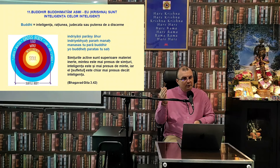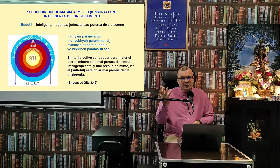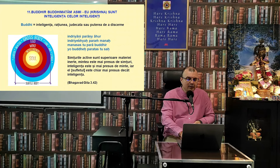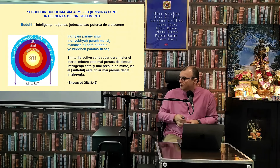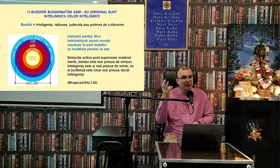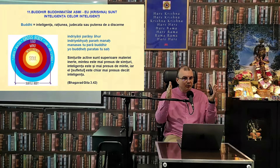Tuturor le plac oamenii inteligenți. Haideți să analizăm sensul direct al acestei opulențe. Vom începe cu semnificația etimologică a cuvântului Buddhi — inteligența, rațiunea, judecata, sau puterea de a discerne, de a vedea diferența dintre lucrurile corecte, lucrurile greșite și lucrurile care sunt aproape corecte sau aproape greșite.